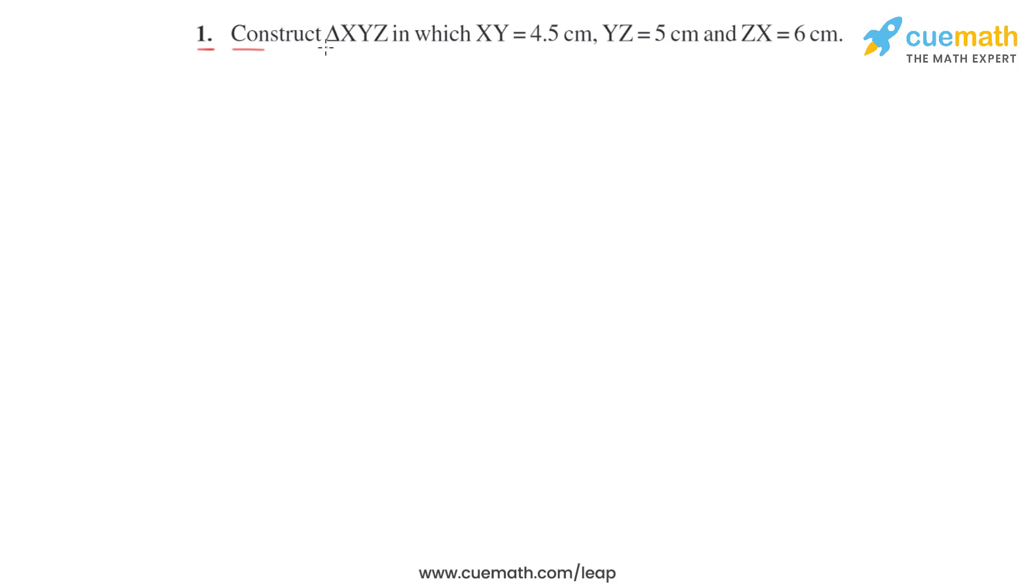First question, construct triangle XYZ in which XY is 4.5 cm, YZ is 5 cm and ZX is 6 cm. That is, we have to construct a triangle whose all three sides are given: 4.5, 5 and 6. So, let us start.